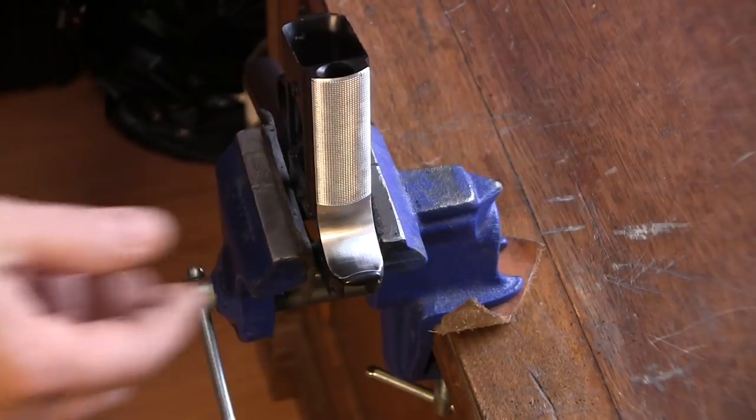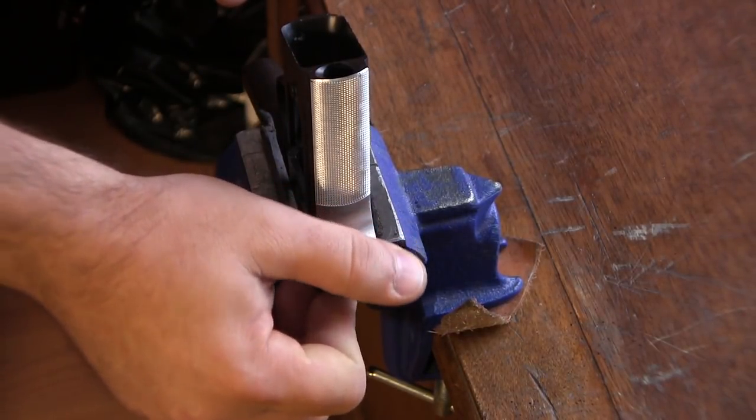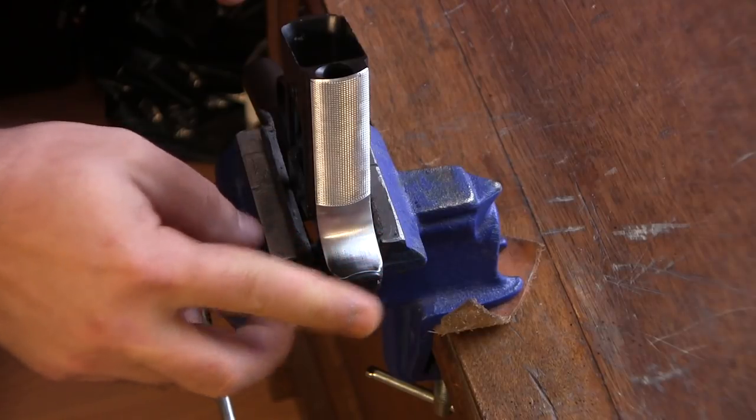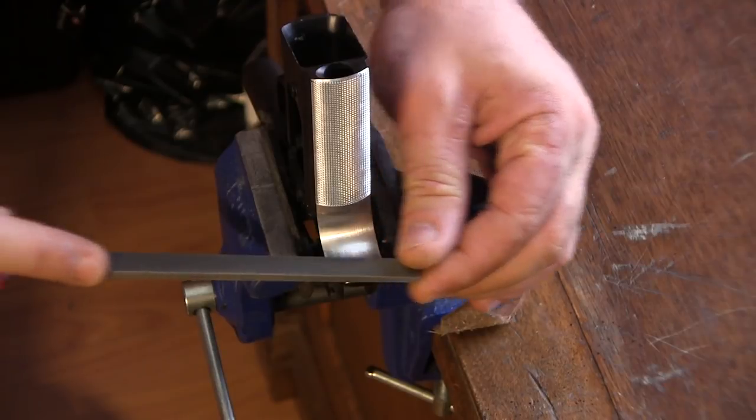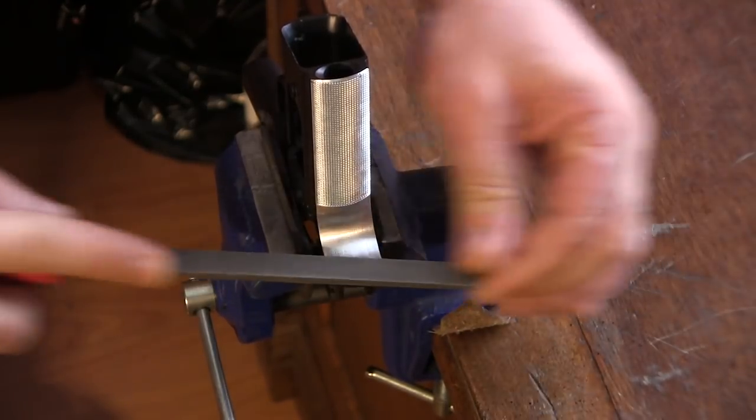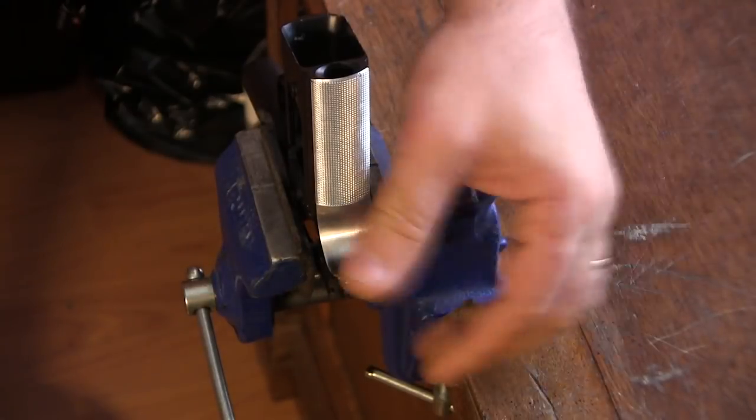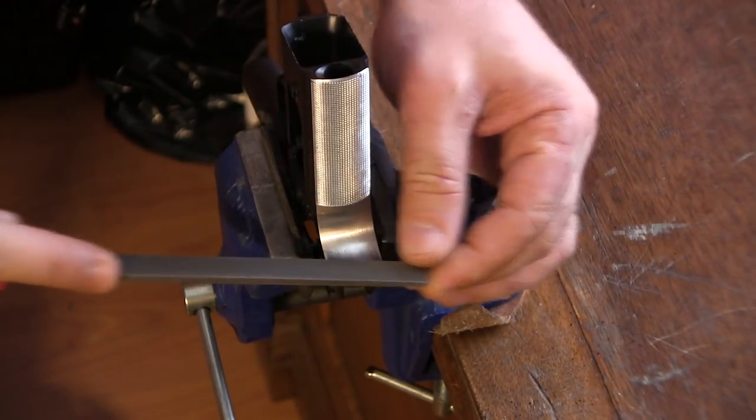I'm going to go ahead and just round this area up towards the top of the frame. Flat file, and all I'm going to do is file just the very back bottom of the beaver tail.